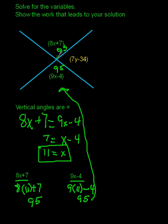Now, the next piece I'm going to take a look at is this angle over here, the 7Y minus 34. And that angle that is right there, the 7Y minus 34, that angle is going to be right next to the 8X plus 7 angle and the 9X minus 4 angle.